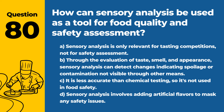Question 80. How can sensory analysis be used as a tool for food quality and safety assessment? a. Sensory analysis is only relevant for tasting competitions, not for safety assessment. b. Through the evaluation of taste, smell, and appearance, sensory analysis can detect changes indicating spoilage or contamination not visible through other means. c. It is less accurate than chemical testing, so it's not used in food safety. d. Sensory analysis involves adding artificial flavors to mask any safety issues. Answer: b. Through the evaluation of taste, smell, and appearance, sensory analysis can detect changes indicating spoilage or contamination not visible through other means. Sensory analysis is a valuable tool for initial quality and safety assessments.